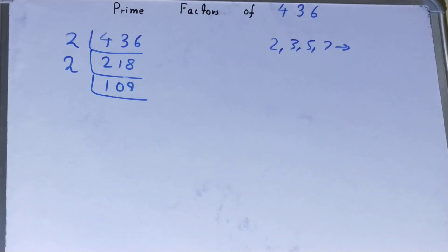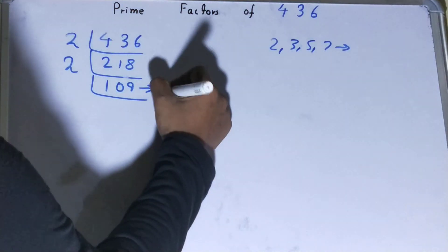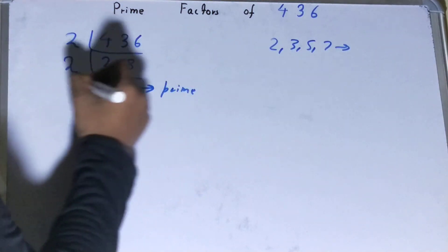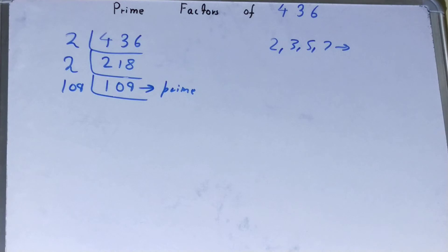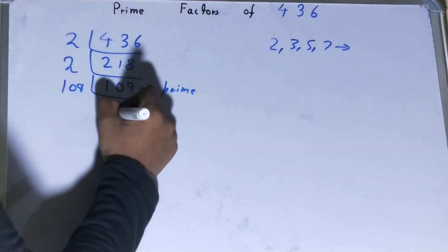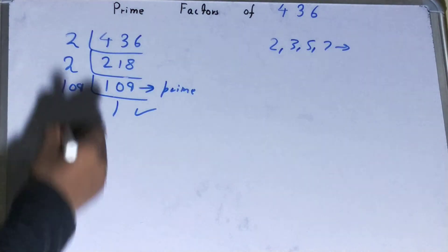Now is this 109 divisible by 2? The answer is no, because it is an odd number, and it is also a prime number, so it is only divisible by itself. And when you do so, you will be left with 1. Once you're left with 1, the work is done.